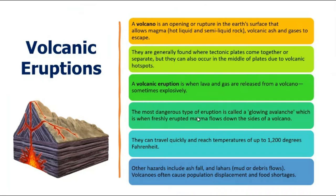A volcano is an opening or rupture in the earth's surface that allows magma — the wholly liquid or semi-liquid rock — or volcanic ashes, gases, and smoke to escape from the surface of the earth. They are generally found where tectonic plates come together, basically where there is a fracture within the tectonic plates, whether it is a constructive, conservative, or destructive type.